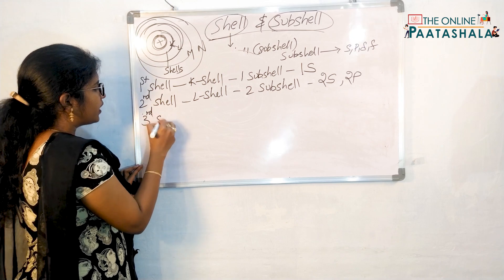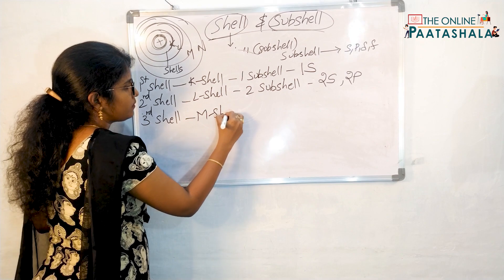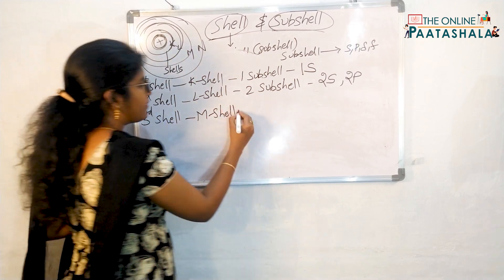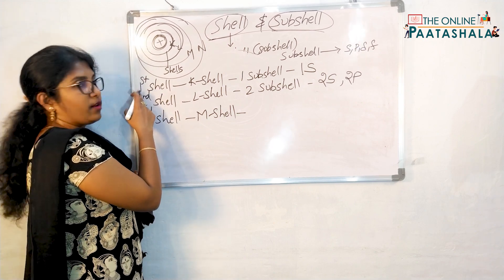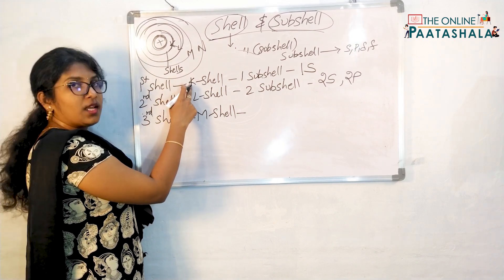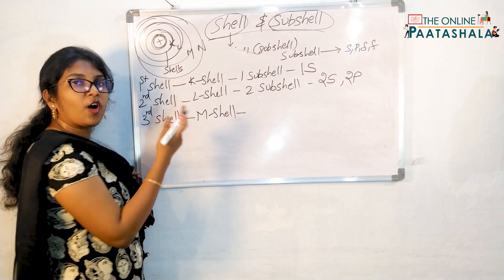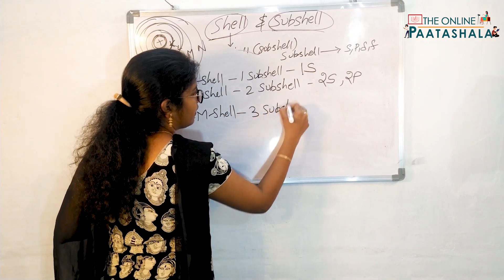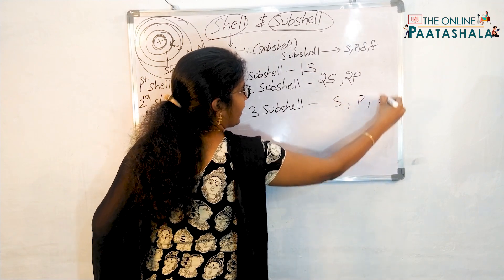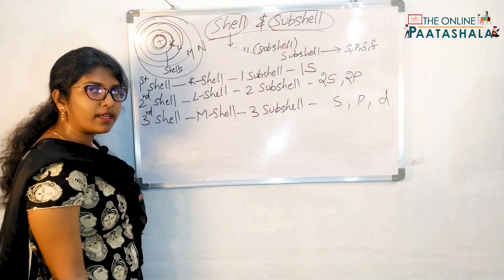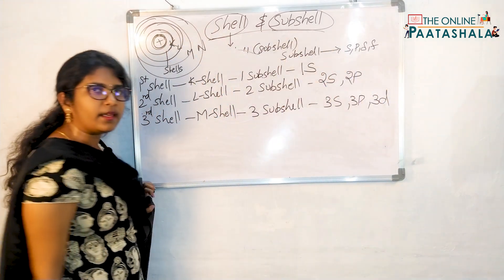Next comes the third shell. What is the third shell? M shell. How many subshells will be present? Following the pattern: first shell one subshell, second shell two subshells, third shell — three subshells. What are those? S, P, and D. And you will number them as 3S, 3P, and 3D.